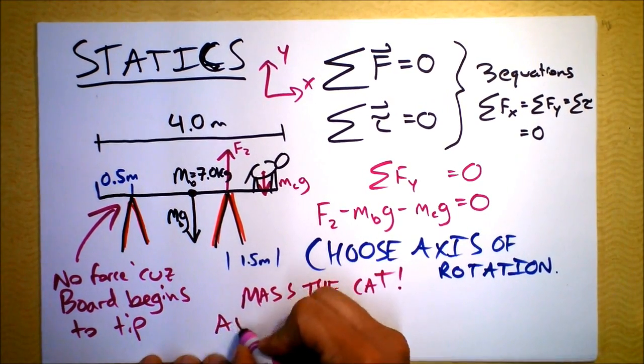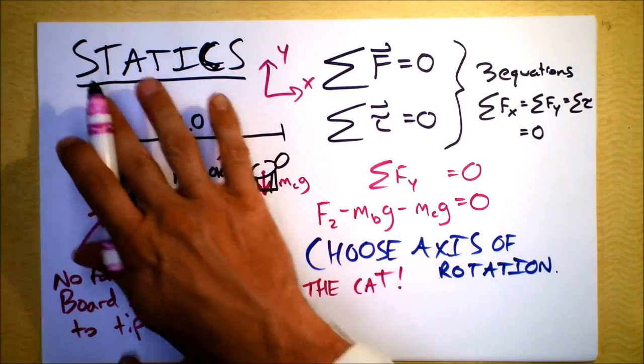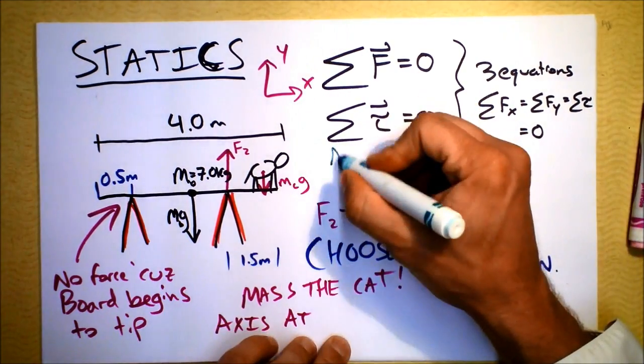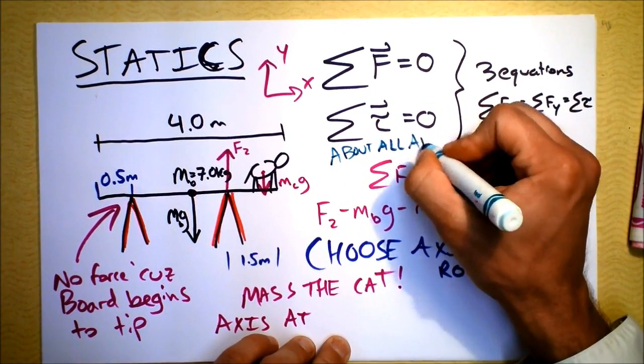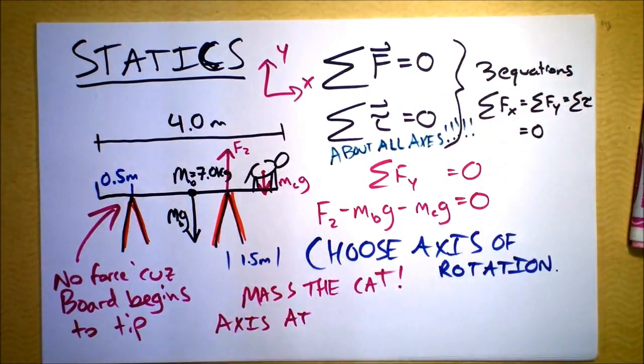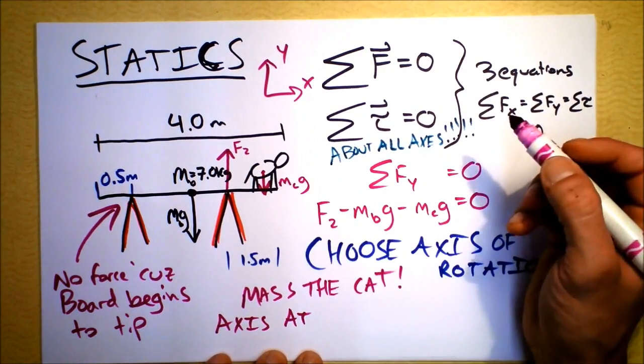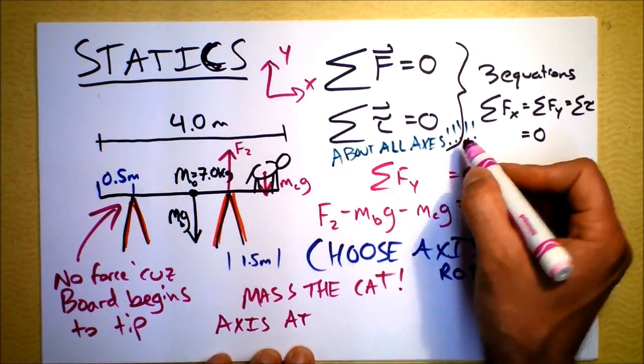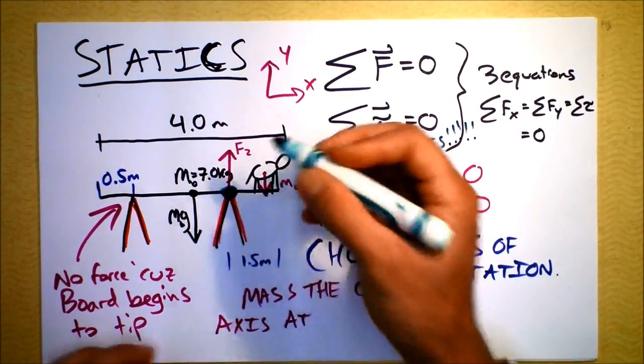Axis at - and you can choose multiple axes of rotation because the cool thing about statics is the net torque is zero about all axes. This is a very powerful statement because you can set up as many equations as you want. They'll all be related to each other in subtle ways, but there are in principle infinite equations that you can get. So we choose our axis right here, and the axis is at F2.